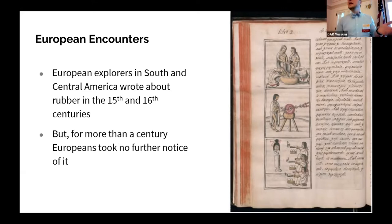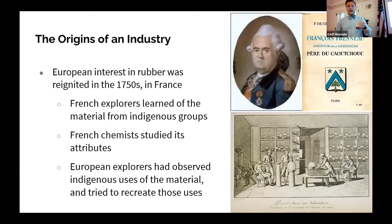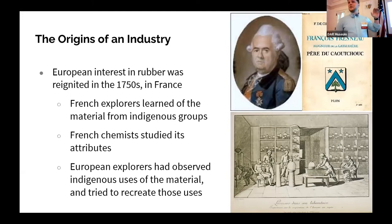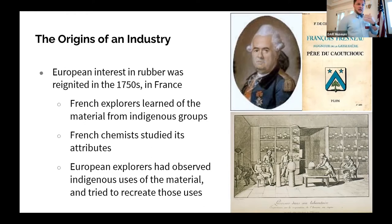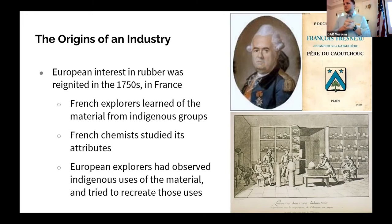Europeans thought this was neat and curious but didn't see particular use in it for quite a while — until in the 1750s and 1760s, teams of largely French explorers, not even there to investigate tropical commodities, encountered it. Charles-Marie de la Condamine was there to measure the distance between meridians as part of a French scientific expedition, but upon encountering Native groups using the material to create waterproof shoes, cloaks, and watertight vessels, was utterly fascinated, acquired a sample, and sent it back to the Academy of Sciences in Dijon.